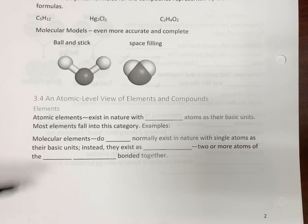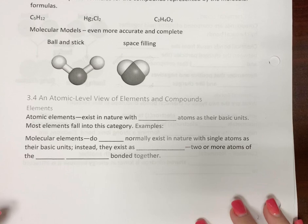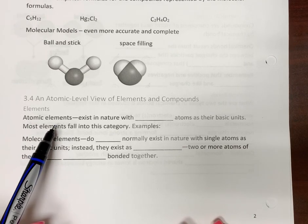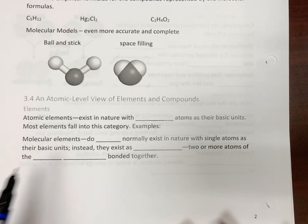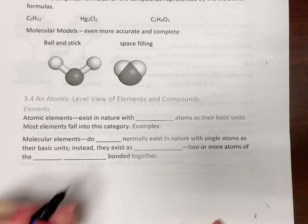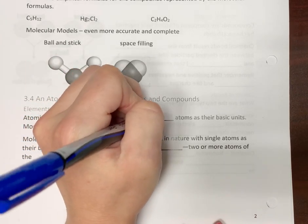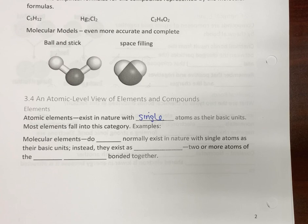Elements, which are ones on the periodic table, they can come in two forms. We're going to call these atomic elements, and this sounds redundant, but it's not. They exist in nature with single atoms as their basic units. Most of the elements are going to be atomic elements.